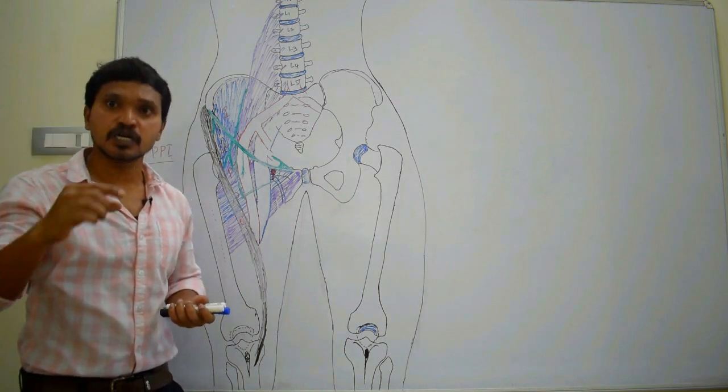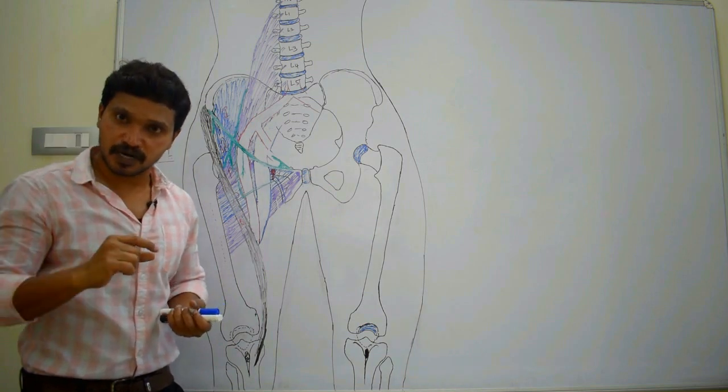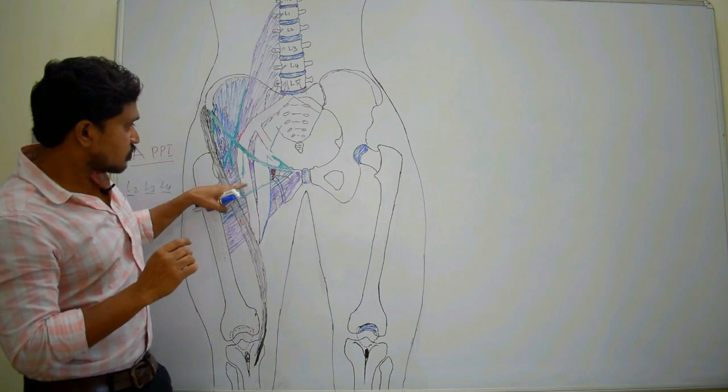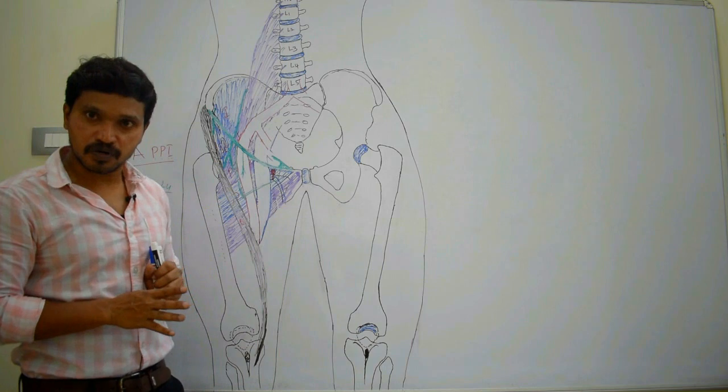In the superficial fascia some structures are present: superficial inguinal group of lymph nodes, superficial branches of femoral artery and corresponding veins, then femoral branch of genitofemoral nerve and the terminal part of great saphenous vein. So these are the boundaries.